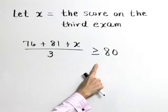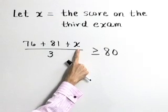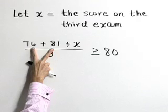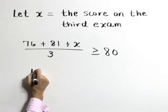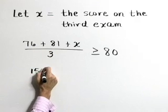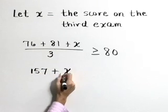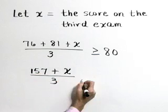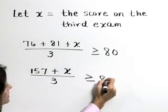Now let's solve this inequality for X. I'm going to start by adding 76 plus 81. That's 157, so we have 157 plus X divided by three, which is greater than or equal to 80.